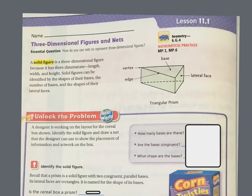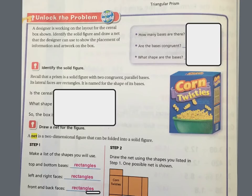Let's unlock the problem. A designer is working on the layout for a cereal box shown. Identify the solid figure and draw a net that the designer can use to show the placement of the information and the artwork on her box. So here's my box. If I were to take scissors and cut it open and then lay it out so that I can see what the actual shapes are, so that way I know what artwork can go on each of these pieces.